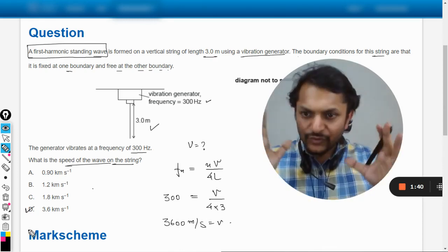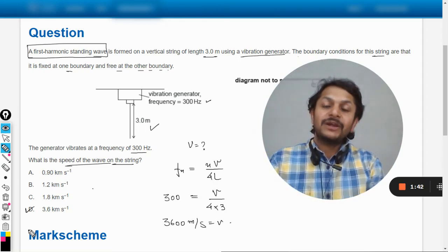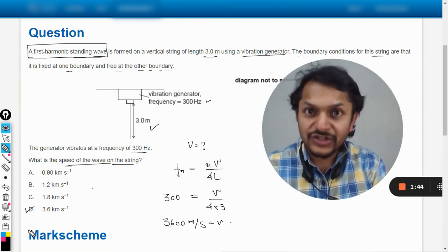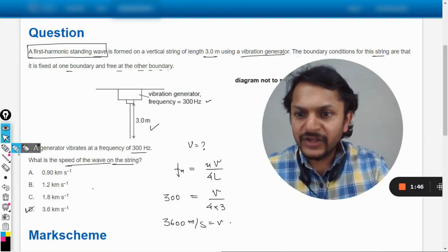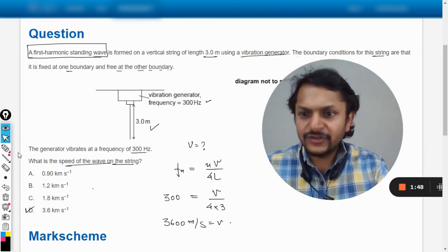That should be the velocity of the wave, so it will be 3.6 kilometers per second, and yes, the answer will be D. Let us verify from the mark scheme whether we have done it right or not. Yes, the answer in the mark scheme is D.